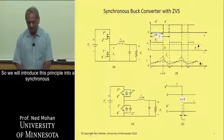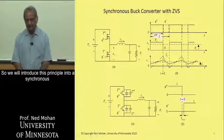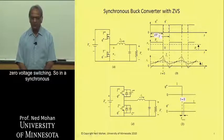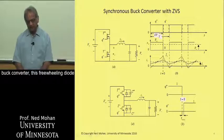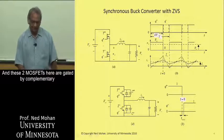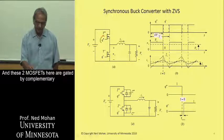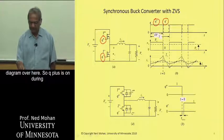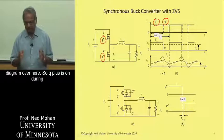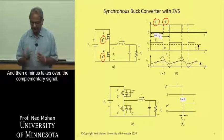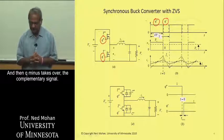So we will introduce this principle into a synchronous buck converter with zero voltage switching. In a synchronous buck converter, this freewheeling diode is replaced by another MOSFET. And these two MOSFETs here are gated by complementary signals, Q plus and Q minus, and they are shown in this diagram over here. So Q plus is on during the duty ratio times the time period, and then Q minus takes over, the complementary signal.